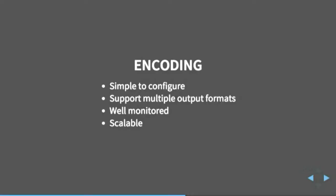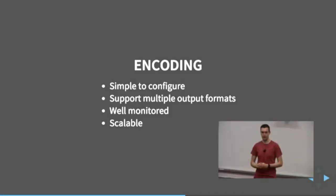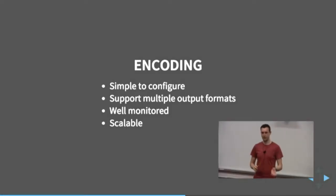The next part, which I'm going to spend a bit more time on, is the encoding. I want a system that is simple to configure, outputs whatever different formats I want, is really well monitored, and is scalable. If we have a lot of different videos that need to be encoded at once, I don't want one box doing it — I want lots doing it. Otherwise we'll never get them done for the next day.